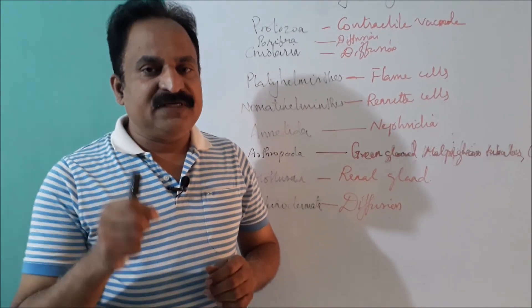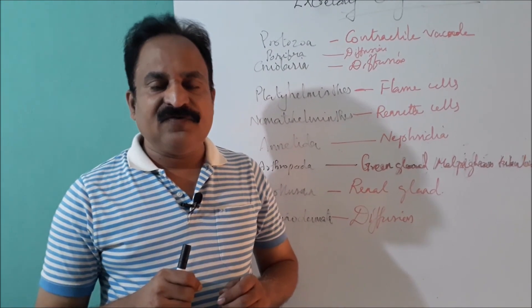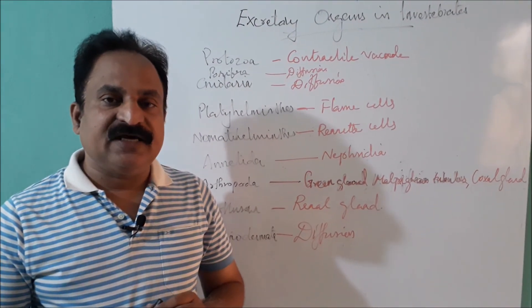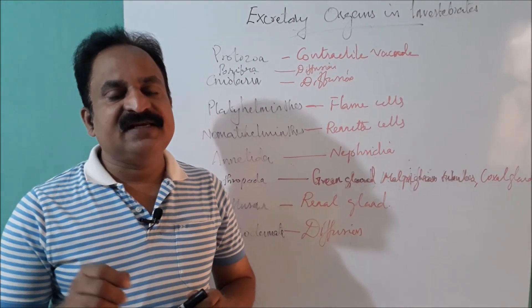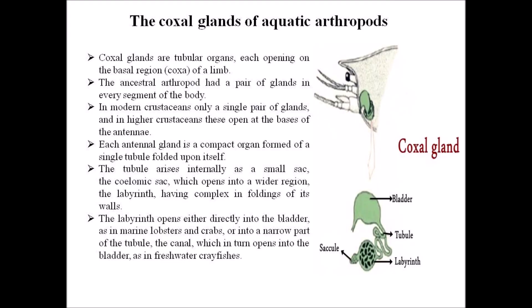The green gland, Malpighian tubules, and coxal gland are excretory structures of Arthropoda. The green gland is the excretory structure of crustaceans, and Malpighian tubules are the excretory structure present in insects. Coxal glands are the excretory organs present in aquatic arthropods — they are tubular organs, each opening on the basal region or coxa of a limb. The ancestral arthropod had a pair of glands in every segment of the body. In modern crustaceans, only a single pair of glands remains, and in higher crustaceans these open at the basis of the antennae.